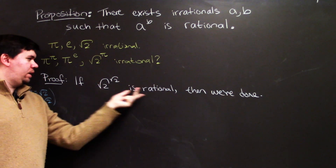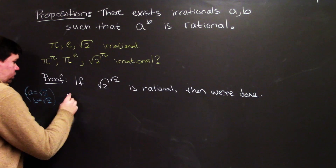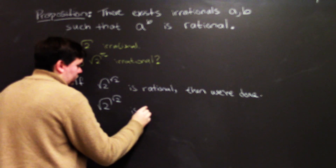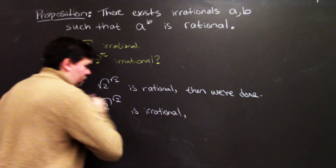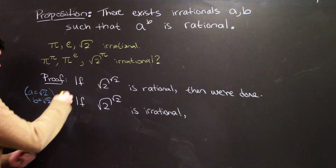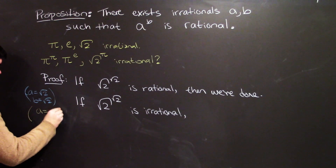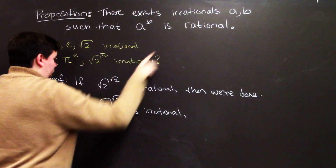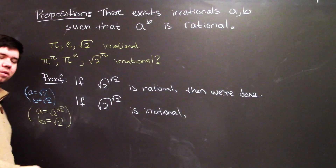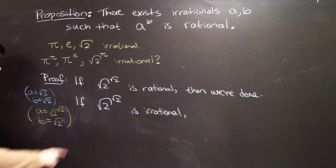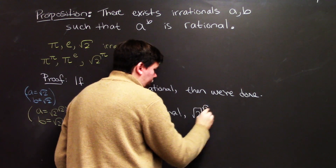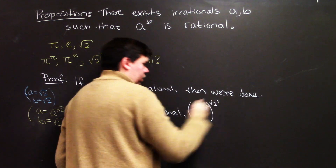But we can't stop there because we don't know it actually is rational. What if it's irrational? If the square root of 2 to the power of the square root of 2 is irrational, let's make that our new a. So a equals the square root of 2 to the square root of 2, and b equals the square root of 2.